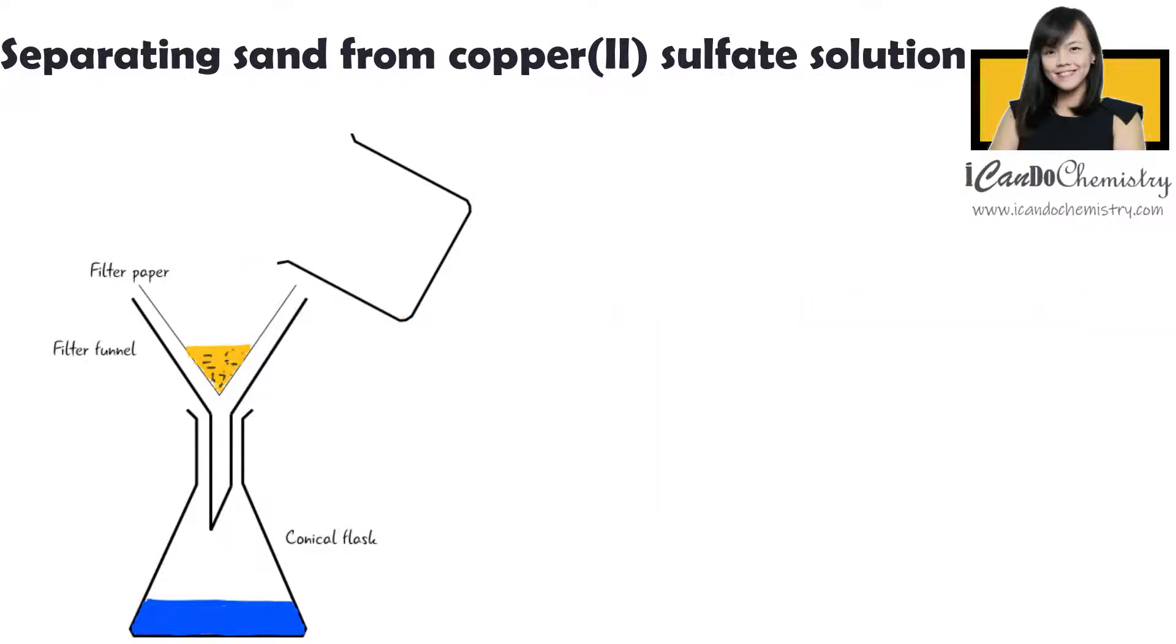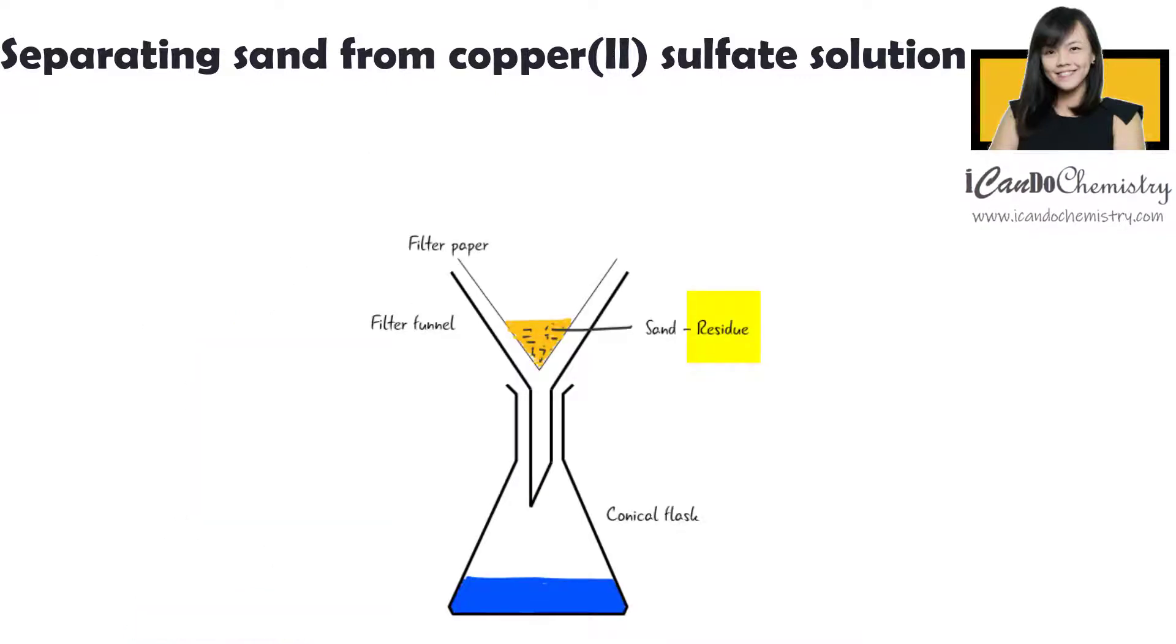Upon filtration, sand will remain in the filter paper. We call this the residue. The component that passes through the filter paper is called the filtrate. In this case, copper-2-sulfate solution is the filtrate.